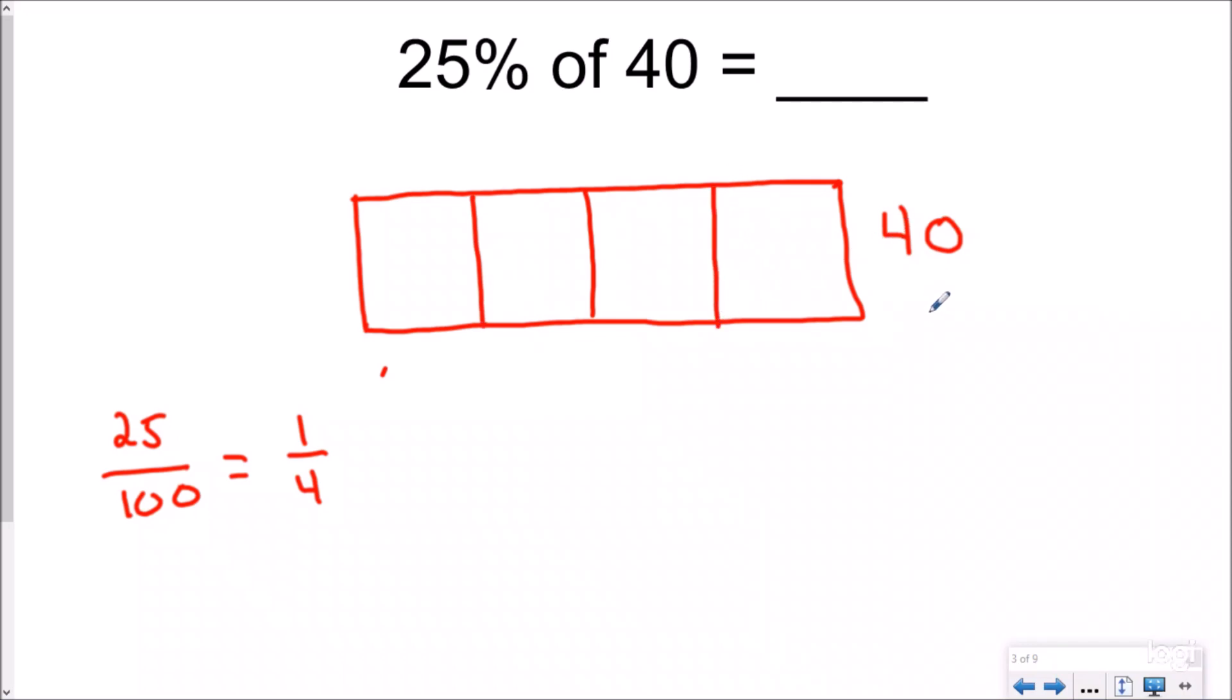And then you think to yourself, okay, well I have four equal groups and I have 40 to split that into. How many goes in each group? And obviously the answer would be 10. And then you just wanted to know 25%, which is equivalent to one fourth. So you really only want to know one of these pieces. And so 25% of 40 equals 10.